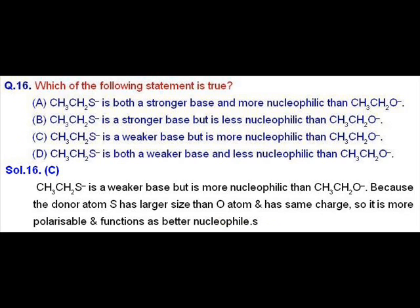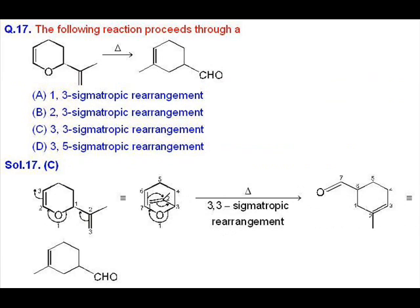They are simple diastereomers. Question 16: Ethyl sulfide anion has donor atom sulfur, so it is more polarizable and functions as a better nucleophile but is a weaker base. A stronger base has more charge density and is less polarizable. Compared to ethoxide anion, ethyl sulfide anion is a stronger nucleophile but a weaker base. The answer is option C.